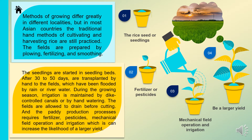First of all, the seedlings are started in seedling beds. After 30 to 50 days, they are transplanted by hand to the fields, which have been flooded by rain or river water. During the growing season, irrigation is maintained by controlled canals or by hand watering. The fields are allowed to drain before cutting. The paddy production process requires fertilizer, pesticides, mechanical field operation, and irrigation, which can increase the likelihood of a larger yield.